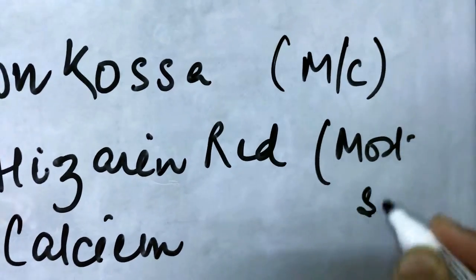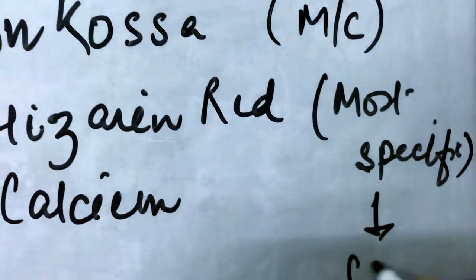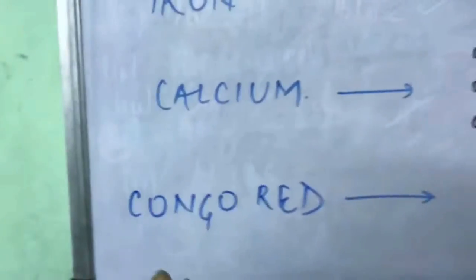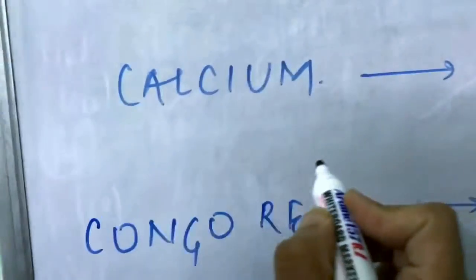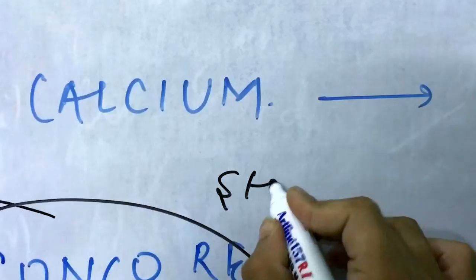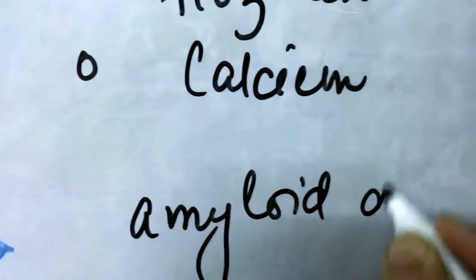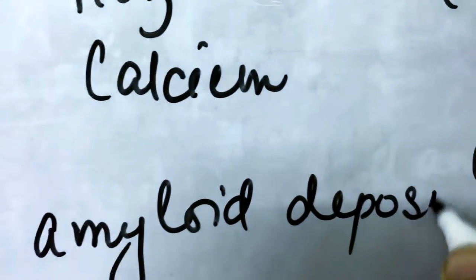As far as Congo red as a stain, remember Congo red is not a substance, Congo red is a stain. And Congo red is very important because Congo red is used to stain amyloid deposits.